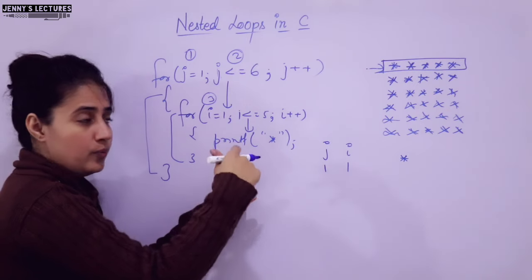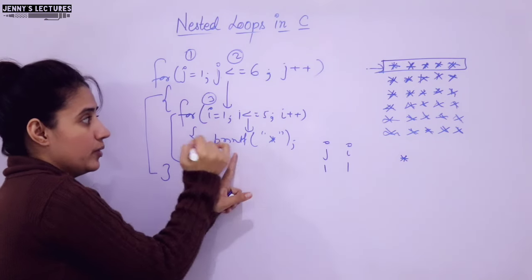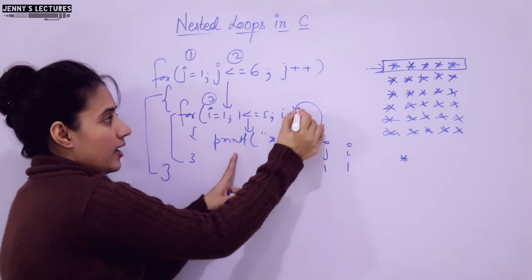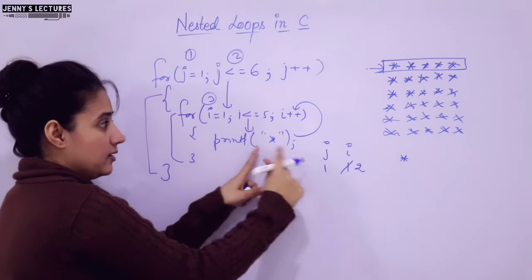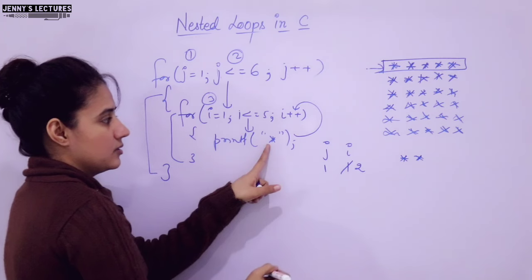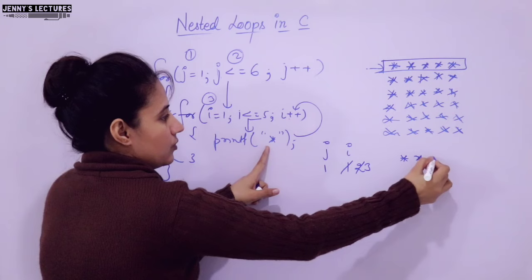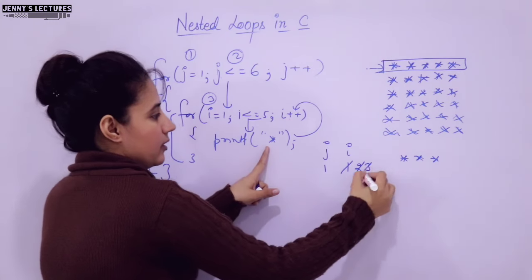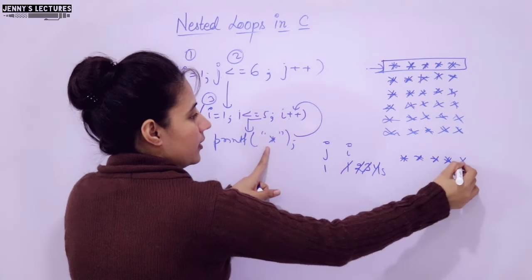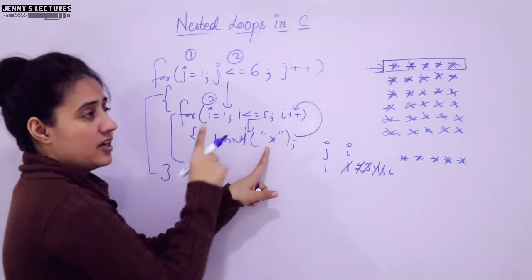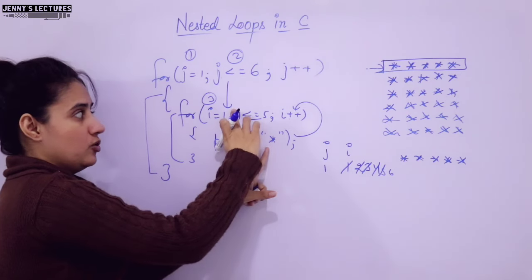Control goes to i++. i becomes 2, condition true, enter again, print star. Again i++. i becomes 3, condition true, print. i becomes 4, condition true, print. i becomes 5, condition true, print. i becomes 6 — is this condition true? No. So control exits from the inner loop.